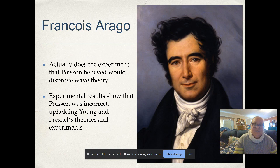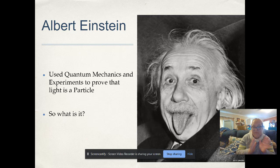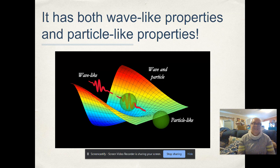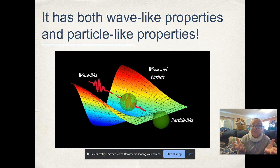After all that back and forth, Albert Einstein entered the picture. With all these people arguing wave versus particle, Einstein used quantum mechanics to prove that light is a particle — which seemed to contradict earlier wave evidence. But then Einstein clarified: light can have both wave-like and particle-like properties, and both models are useful depending on what you're examining.